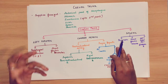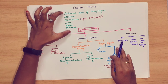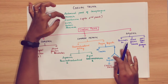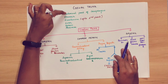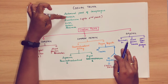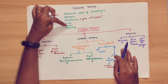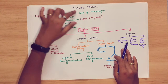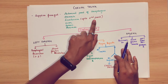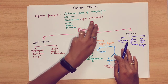The celiac trunk supplies the foregut organs. There are 6 organs. First, the stomach — above the stomach is the esophagus, and below is the duodenum. Then the liver, spleen, and pancreas. The esophagus here refers to the abdominal part of the esophagus. The duodenum is only up to the second part.